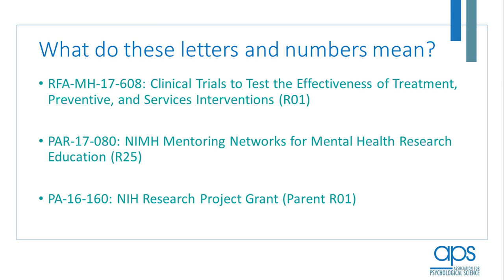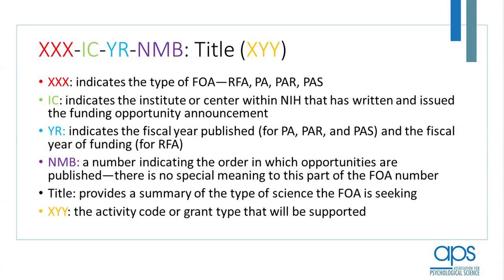When you look at a funding opportunity announcement, it's prefaced by a whole series of letters and numbers. Every NIH funding opportunity announcement follows this same format where there's a series of three letters, followed by an IC code, followed by a two-digit number, followed by a three-digit number, and then there's a title, and then there's an activity code.